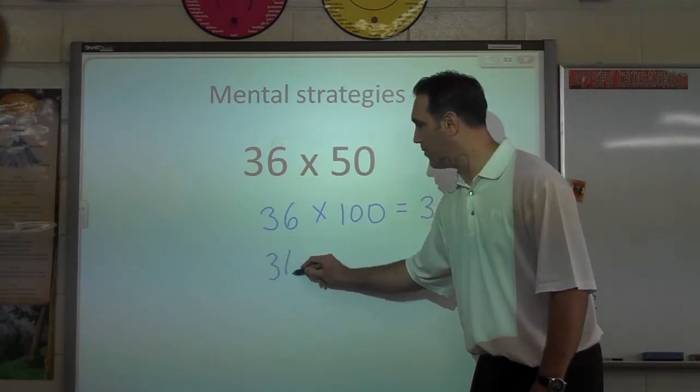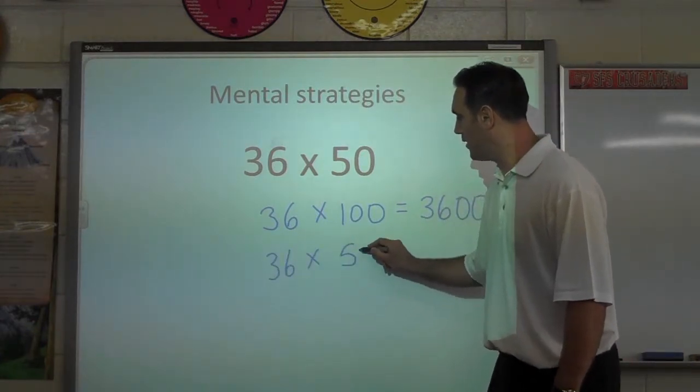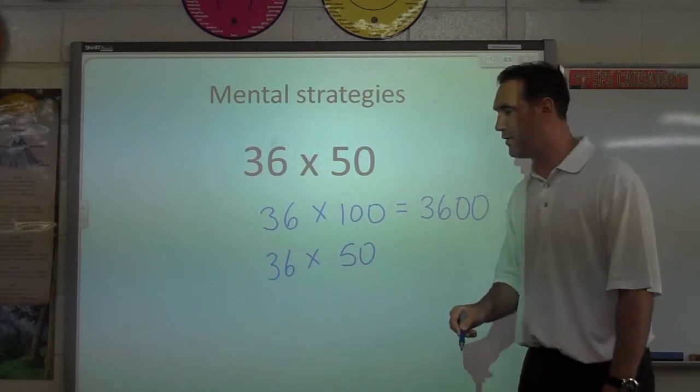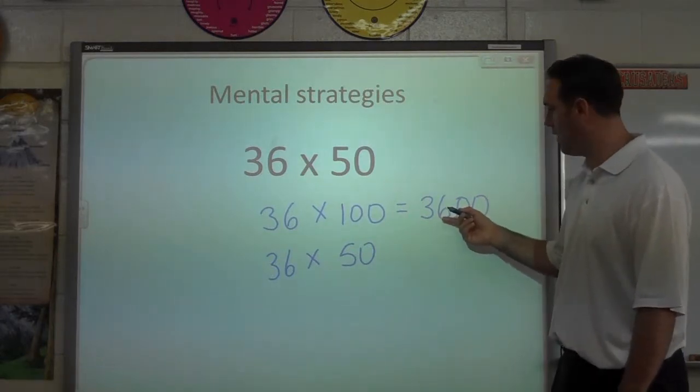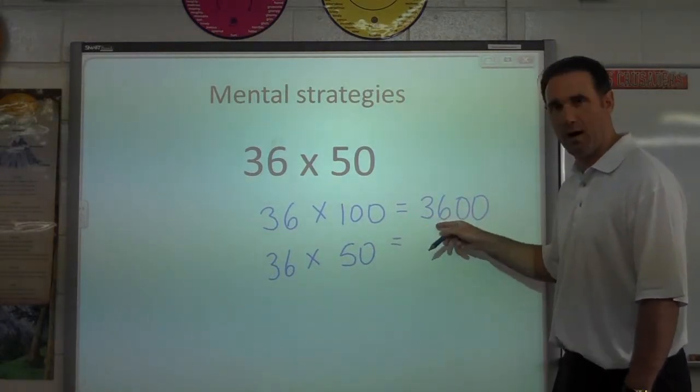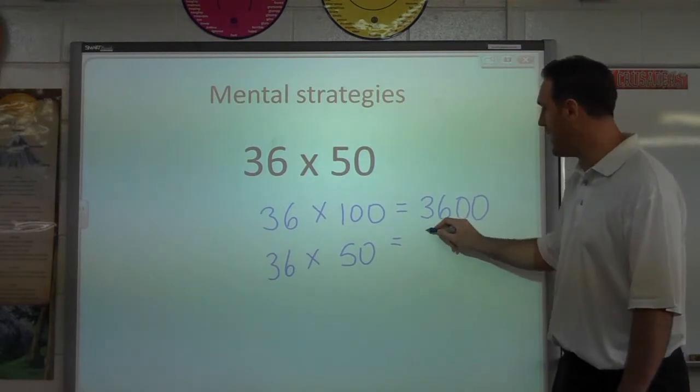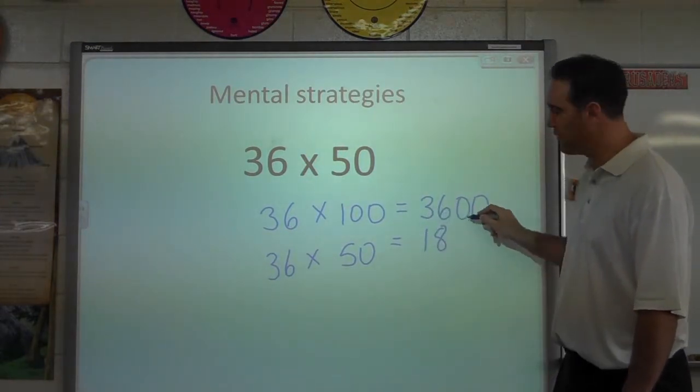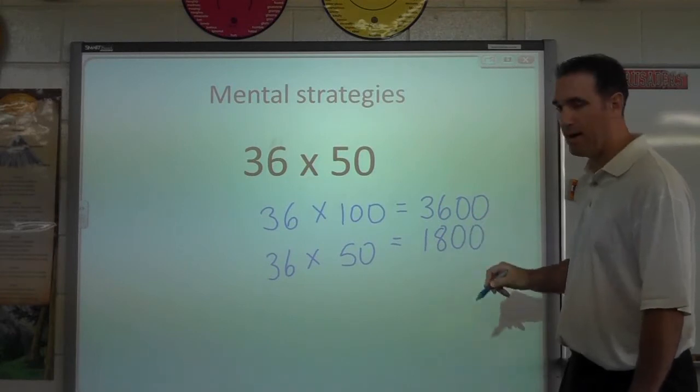If we multiply 36 by 50, we notice that 50 is half of 100. So the answer must be half of this. Half of 36, I know that's 18. Half of 3600, 1800.